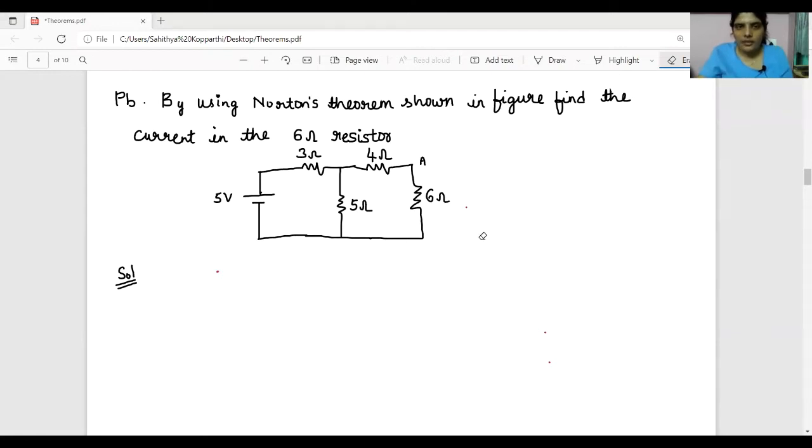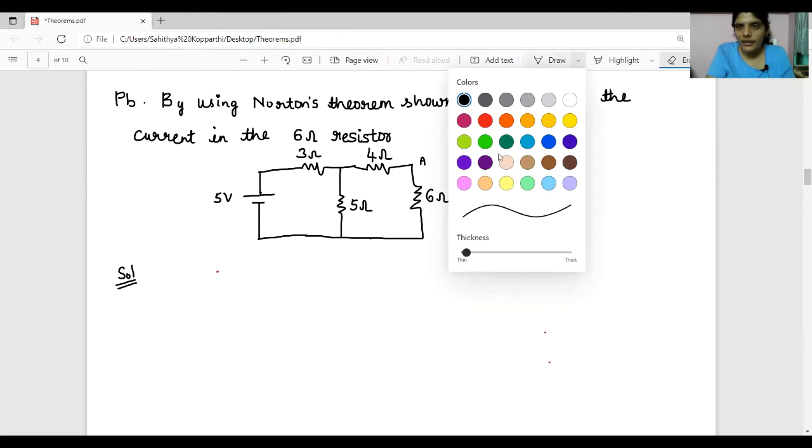Hello everyone, today's session is on Norton's theorem. The problem is by using Norton's theorem shown in figure, find the current in the 6 ohm resistor. First task is to remove the 6 ohm resistor, then calculate Norton's current by short circuiting the terminals.